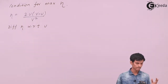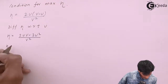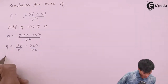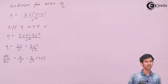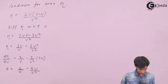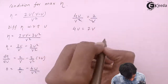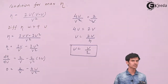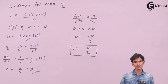Before differentiating, let's multiply the terms out to simplify. Once simplified, we differentiate and equate to zero — from mathematics, this gives the maximum condition. The condition for maximum efficiency is u = V/2. That is, the velocity of the plate should be half the velocity of the jet. If this condition is satisfied, maximum efficiency will be achieved.